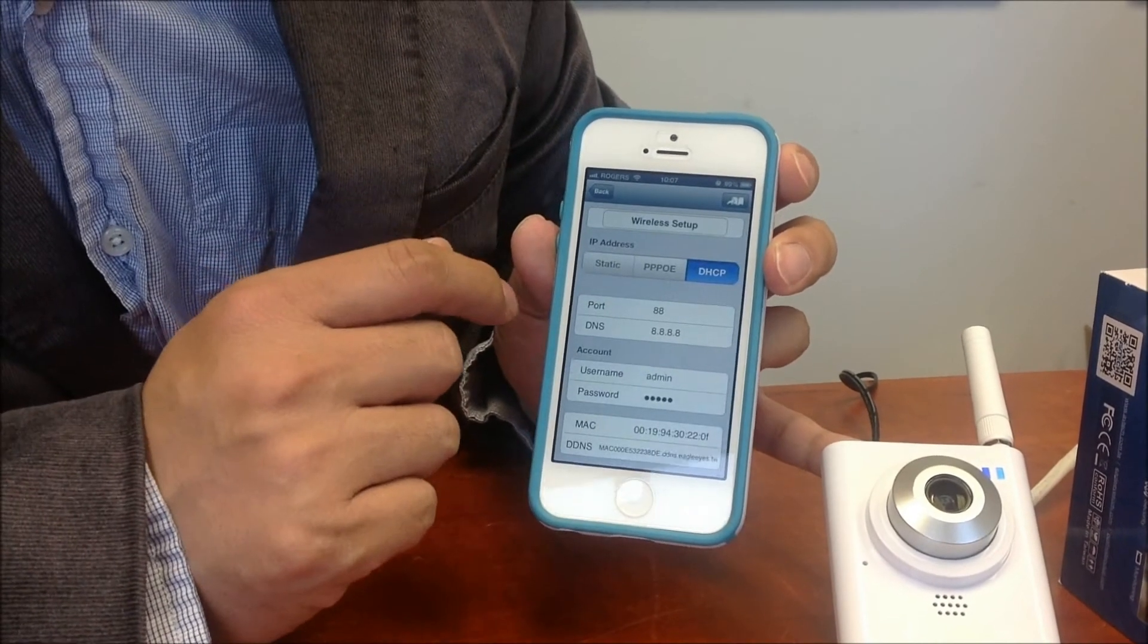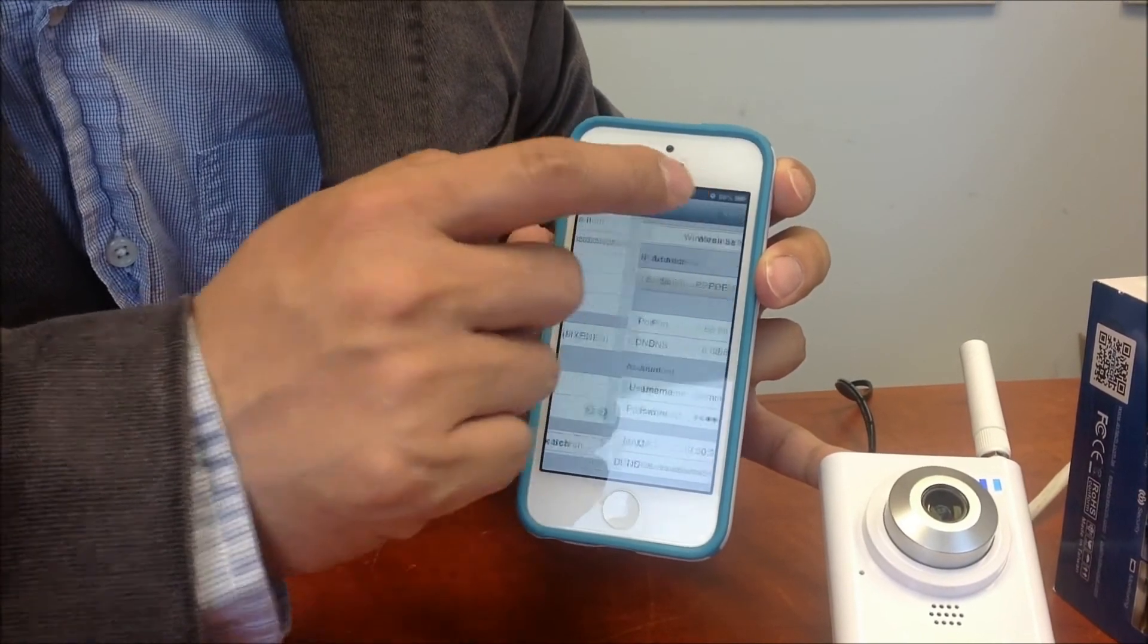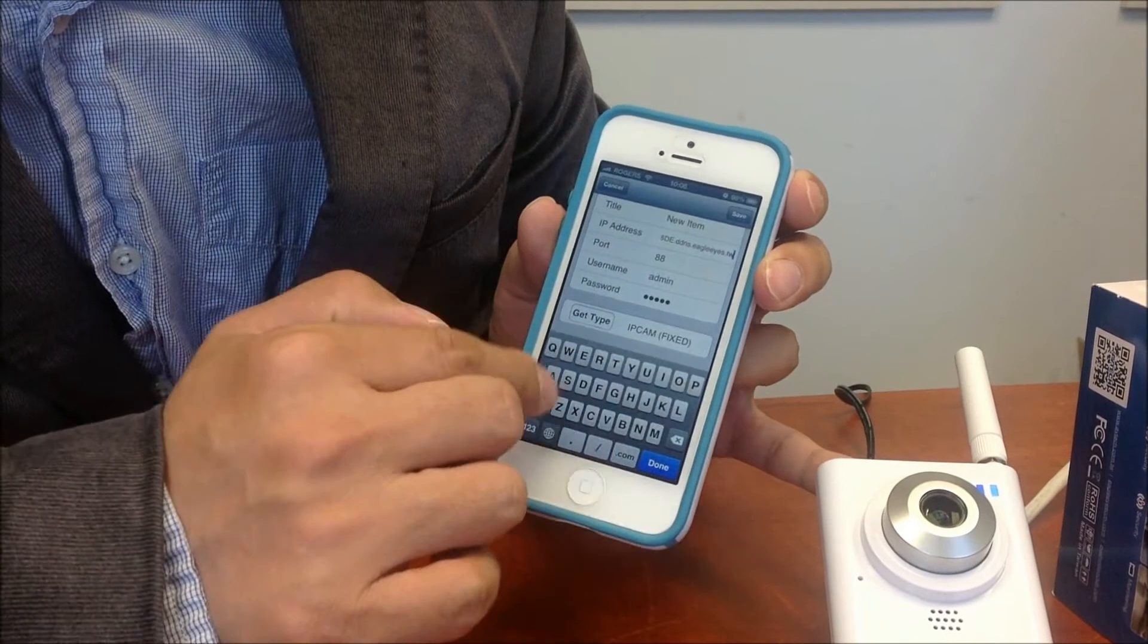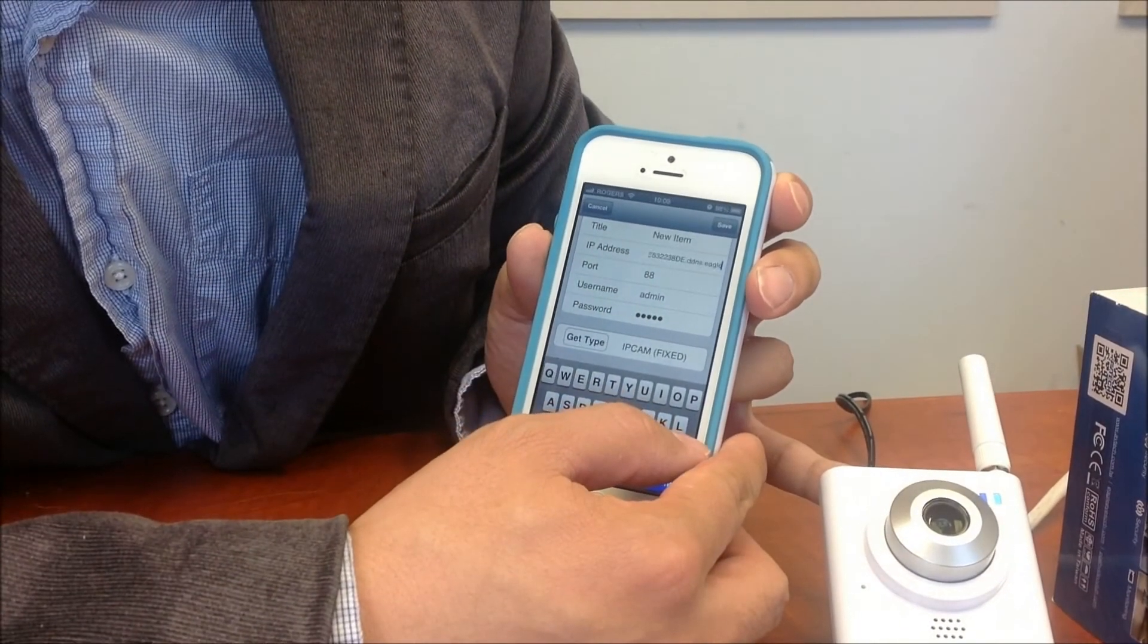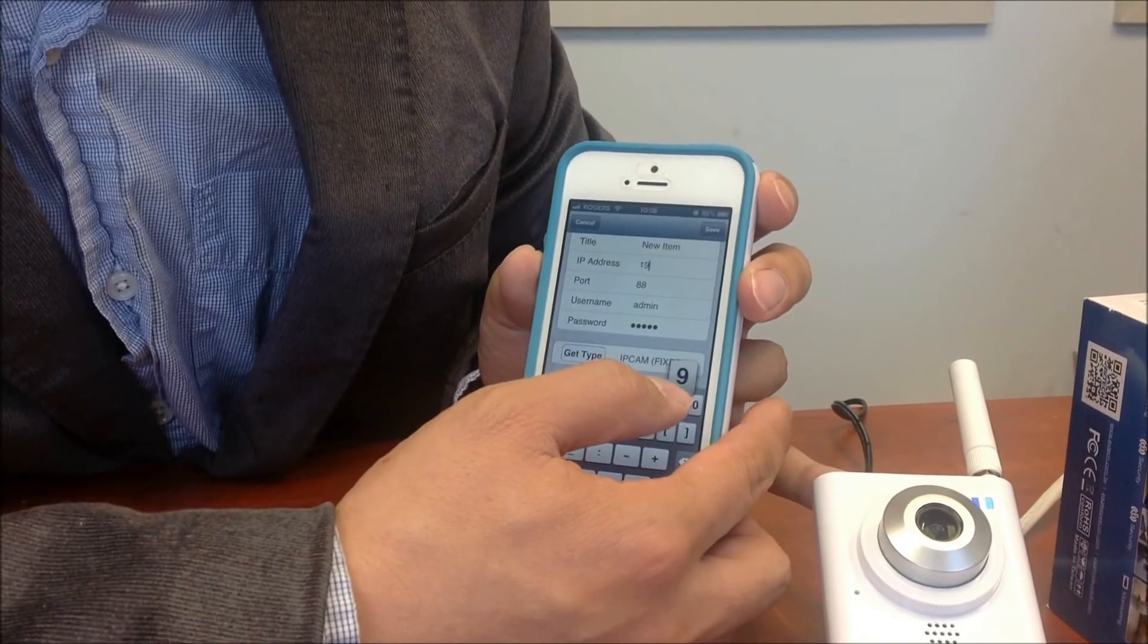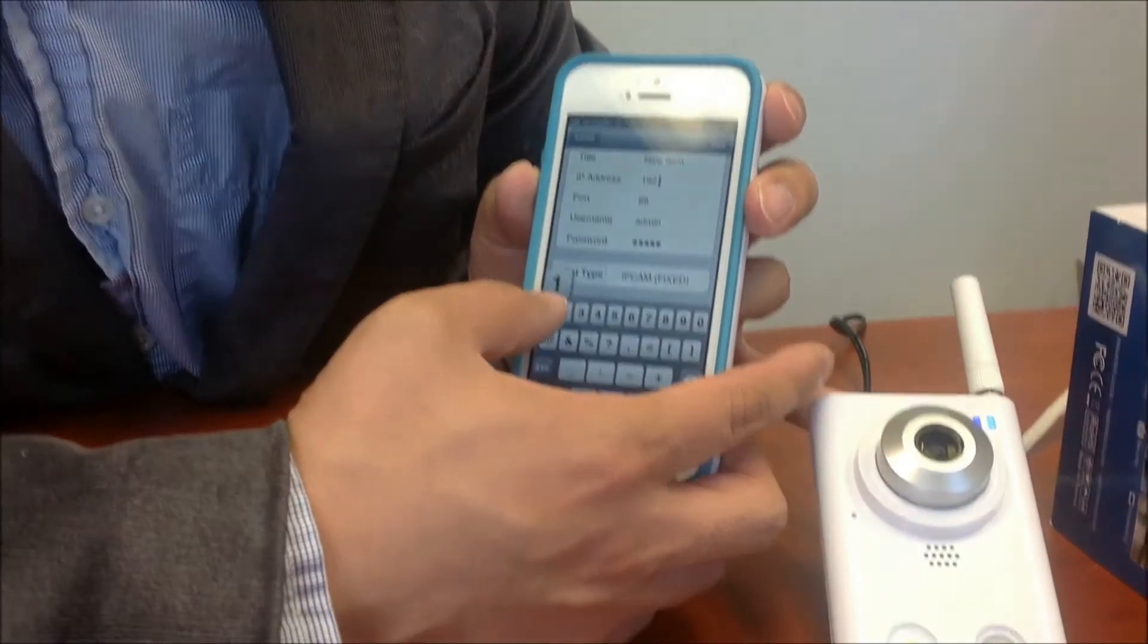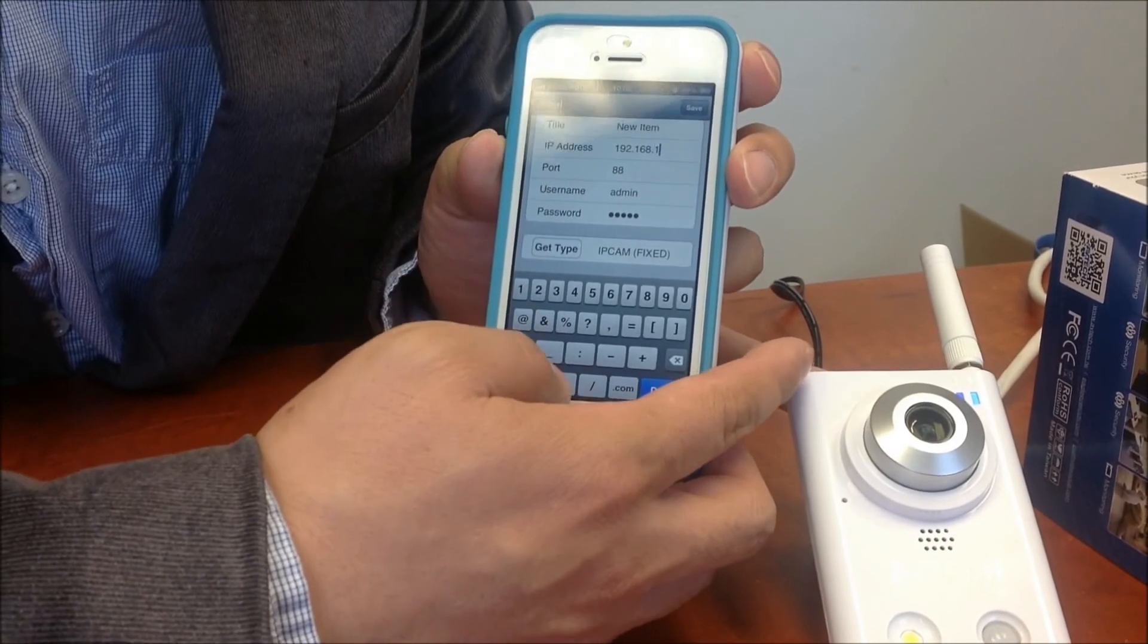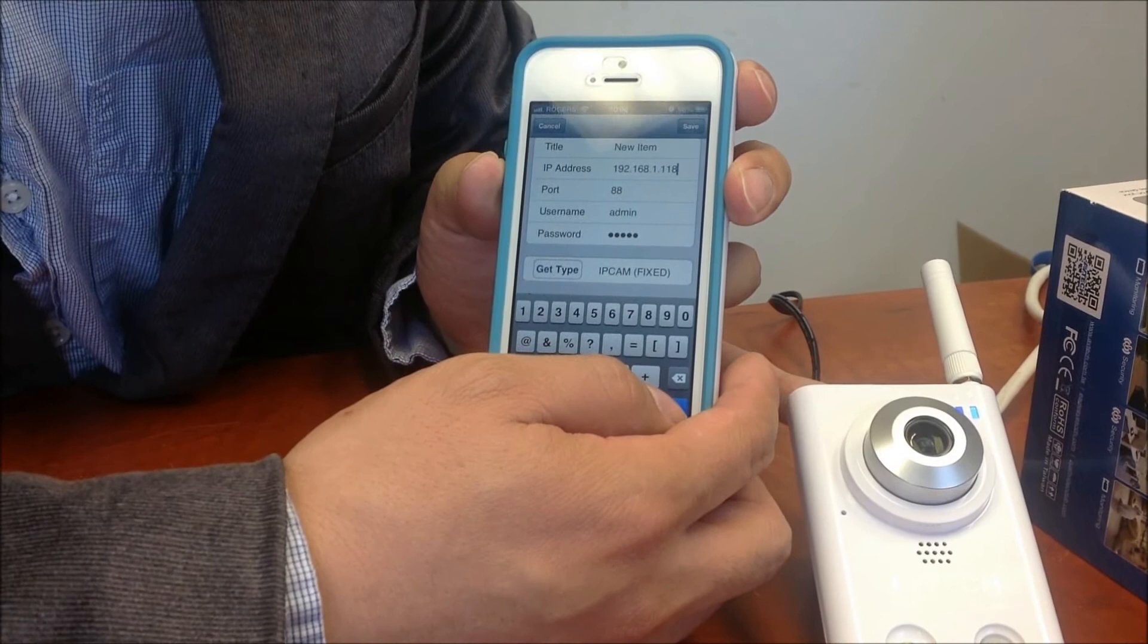So we choose that, and we can save this IP address. So we can name the IP address with internal IP address, which is 192.168.1.118, done.